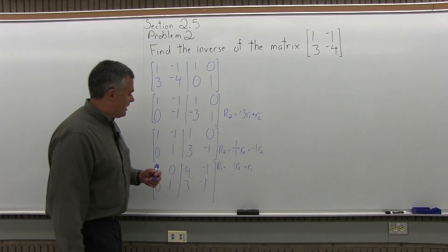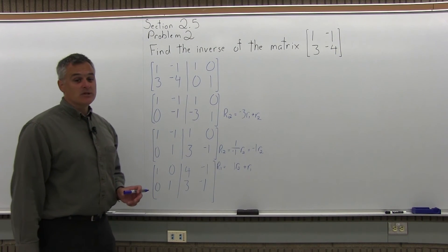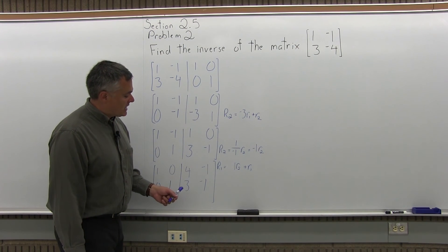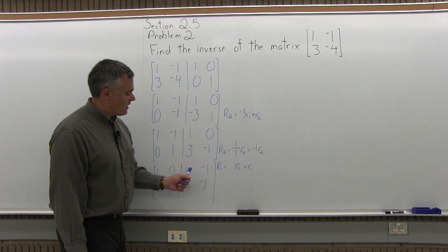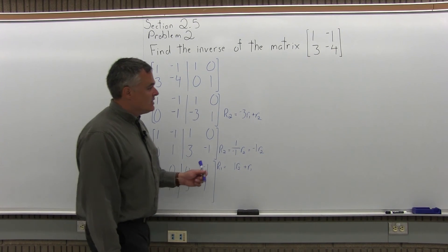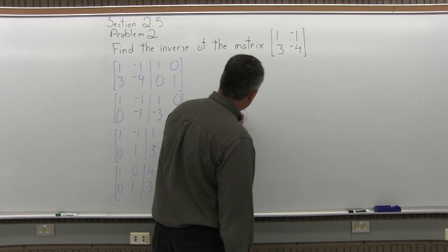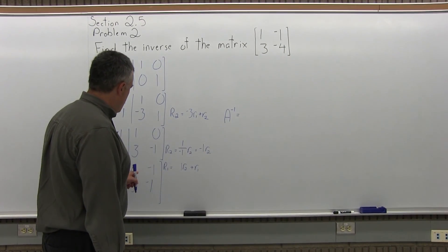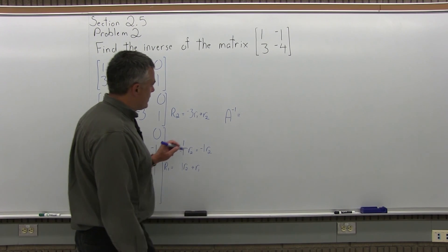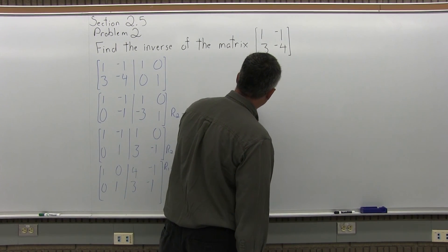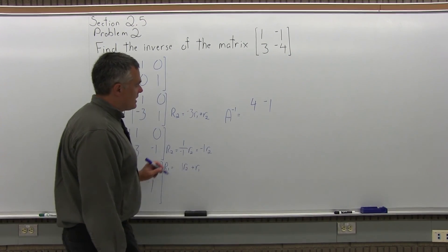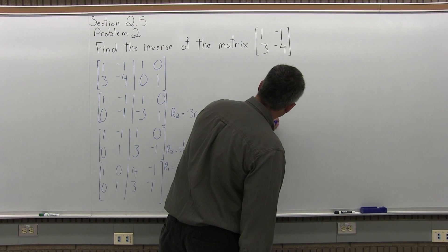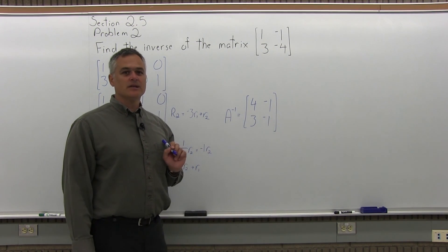Now for my double matrix, the matrix on the left looks like an identity matrix: 1, 0, 0, 1. The matrix on the right half has become the inverse: 4, negative 1, 3, negative 1. So off to the side I can write A inverse — the notation looks like A to the negative 1 power — and it's a small matrix with top row 4, negative 1 and bottom row 3, negative 1. And that's the answer.